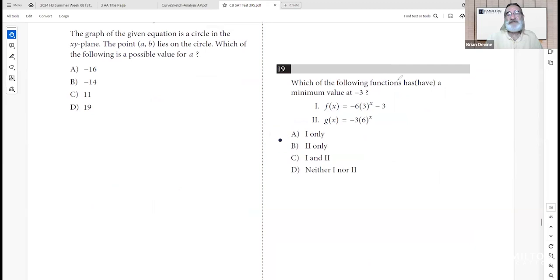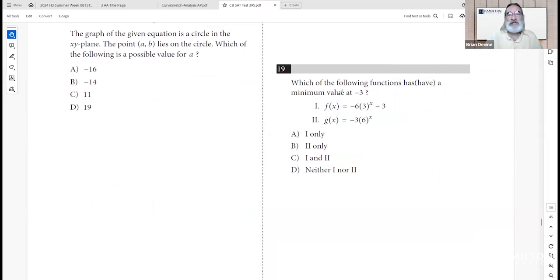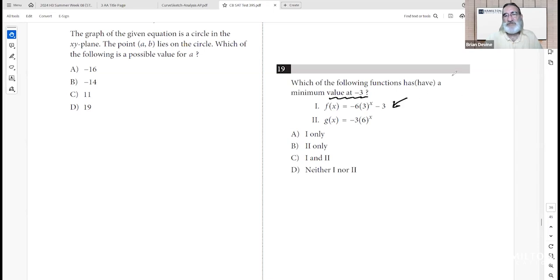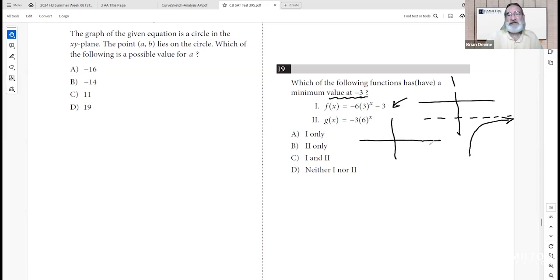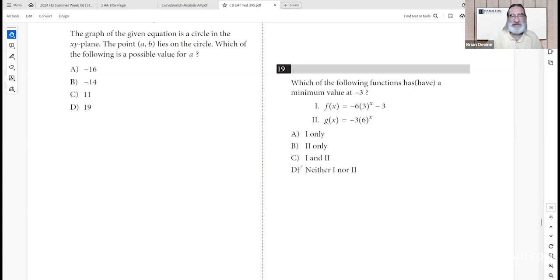Question nineteen: which of the following functions has a minimum at the value negative 3? Both options are exponential. The first has a horizontal asymptote at negative 3, approaching but never reaching it — so negative 3 is not actually a minimum value attained. The second is similarly shifted up. Neither has a minimum value of negative 3; checking both on Desmos confirms this. D is the correct answer.